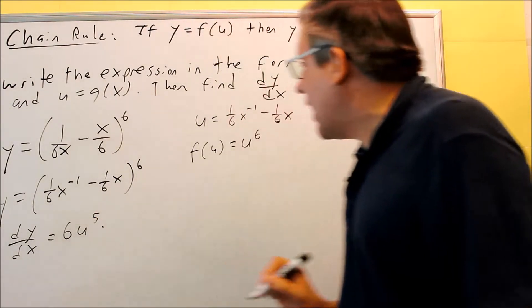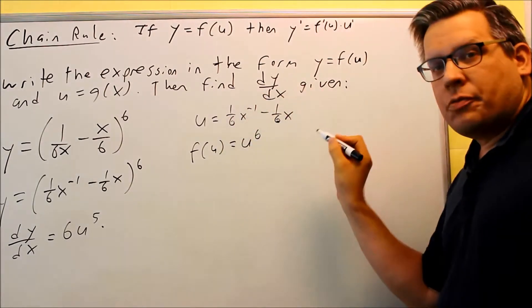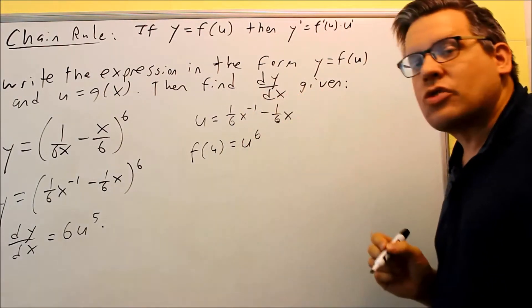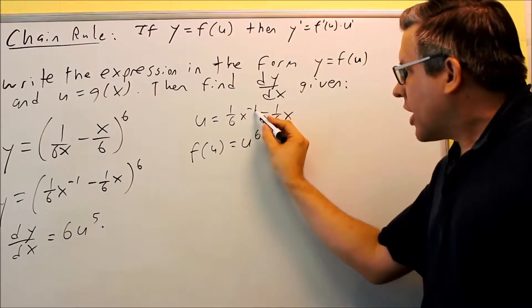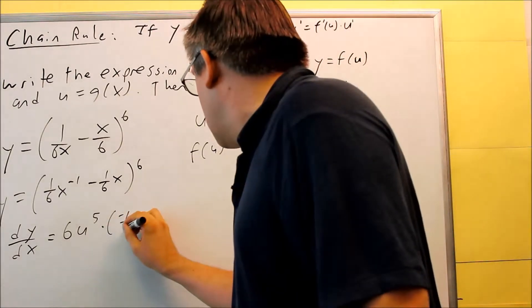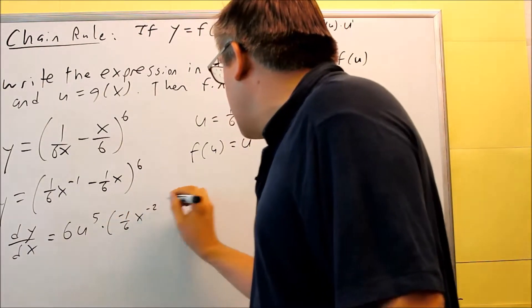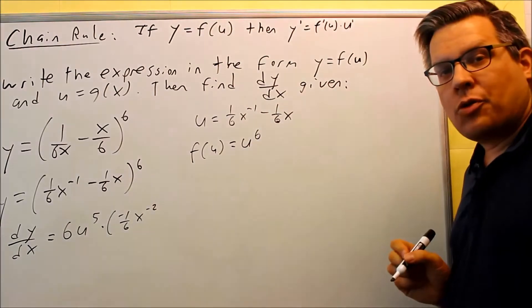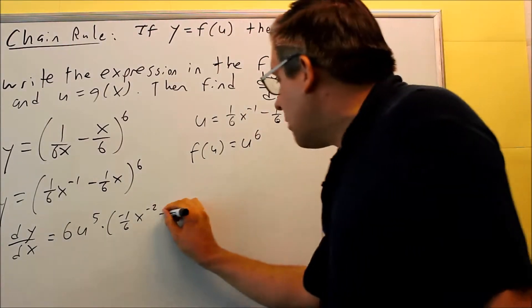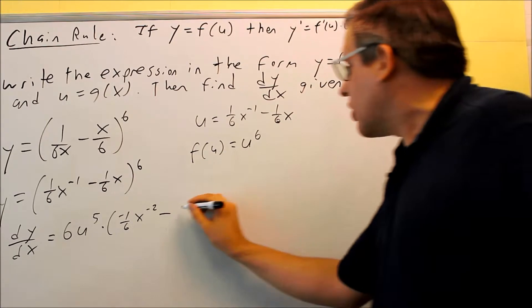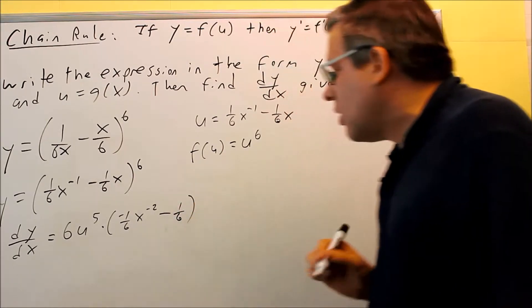Next, we need to multiply this by the derivative of U. So I need to do this using power rule. So negative 1 comes down. It's negative 1 sixth. X to the negative 2 is subtract 1 from the exponent when you do the power rule. I got minus. This one here, I'm just going to end up with 1 sixth left over.